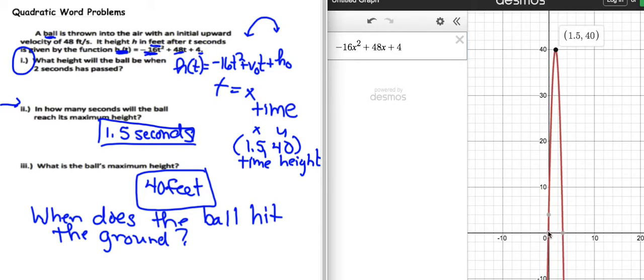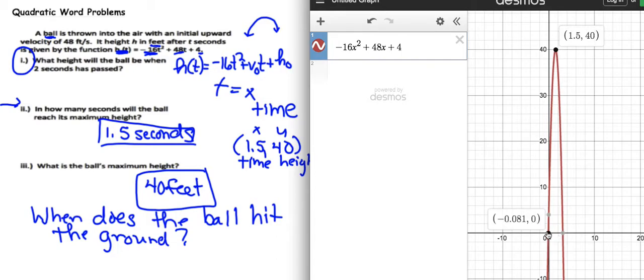Now we can see that it hits the x-axis twice. It hits here, and it also hits here. But we cannot have negative time. So that negative 0.081 doesn't make any sense. That's not even the path of the ball, because the ball actually starts right here and goes this way. So that part of the parabola doesn't really do the path of the ball. So we're going to be looking right here. And so when it goes up and it comes back down, it hits the ground here.